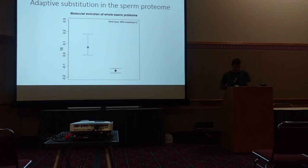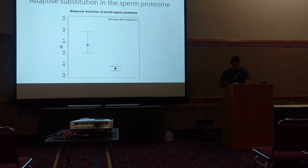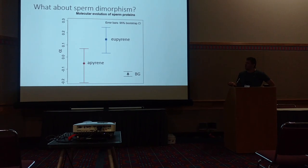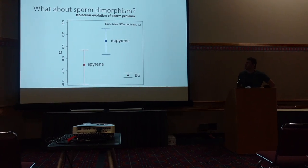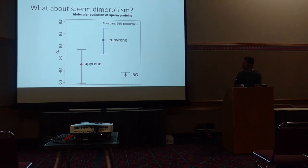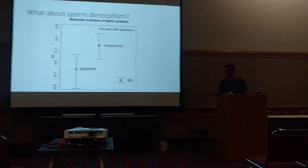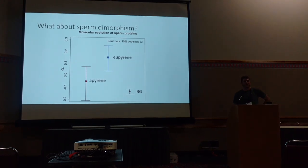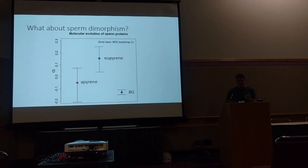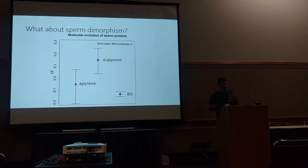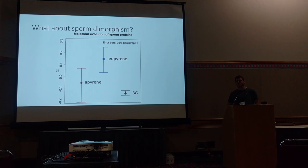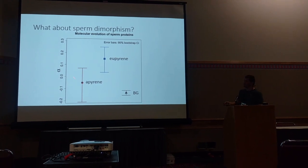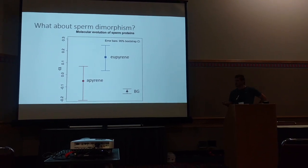That's the sperm proteome as a whole. When we split this apart, it's actually a bit disappointing. We can see the same sort of pattern in the nucleated or eupyrene set, but we honestly can't say much about the apyrene or anucleated set. If you remember back to the sperm proteome slide, there are far fewer unique proteins in that set, so this is really just a lack of statistical power to get a good point estimate.